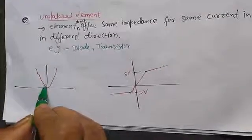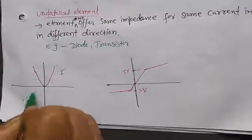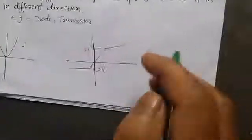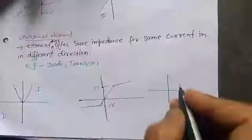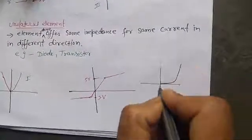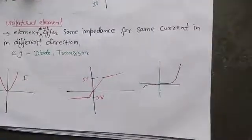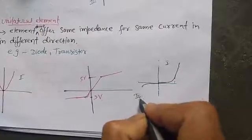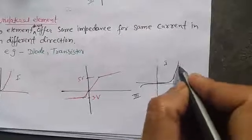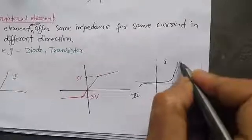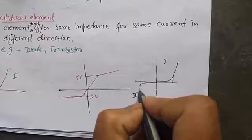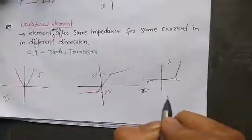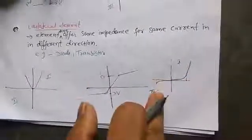This component also — its graph is not a mirror image between the first quadrant and the third quadrant. In the third quadrant, we don't have any graph — it is zero — while in the first quadrant, we have a graph. So this is a unilateral element. As you may have studied in diode characteristics, it is something like this. In the first quadrant, after the knee voltage, a large current flows. But in reverse bias, current does not flow — only minority carrier current flows, which is very small. So the graph in the first quadrant and the third quadrant do not match. These elements are called unilateral elements.